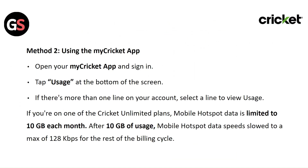Method 2 — Using the My Cricket app: Open the My Cricket app and sign in, then tap on Usage at the bottom of the screen. If there is more than one line on your account, select a line to view usage. If you are on one of the Cricket Unlimited plans, mobile hotspot data is limited to 10 GB each month; after 10 GB, hotspot speed slows to a max of 128 kbps for the rest of the billing cycle.